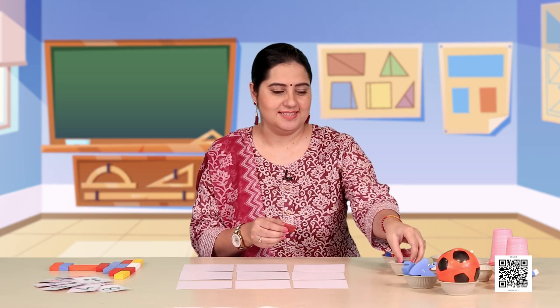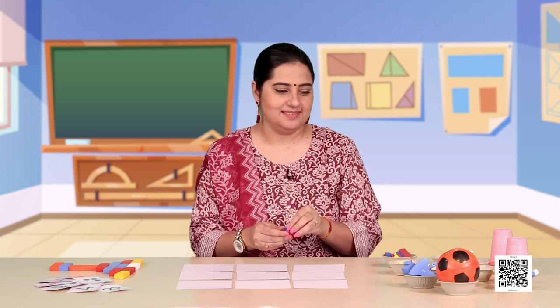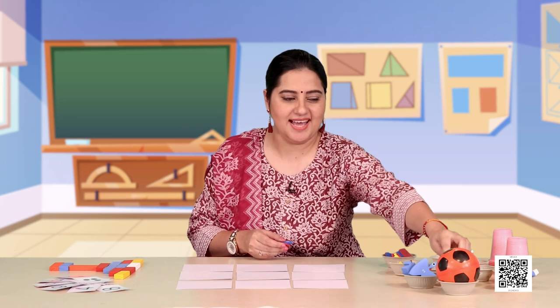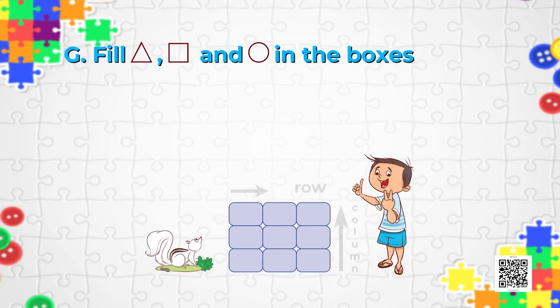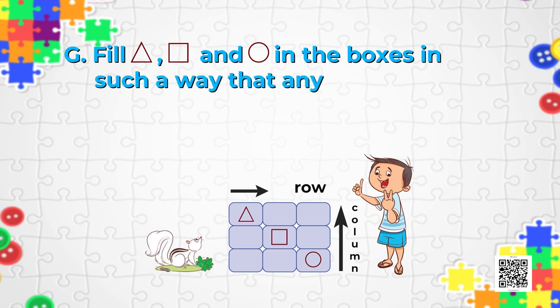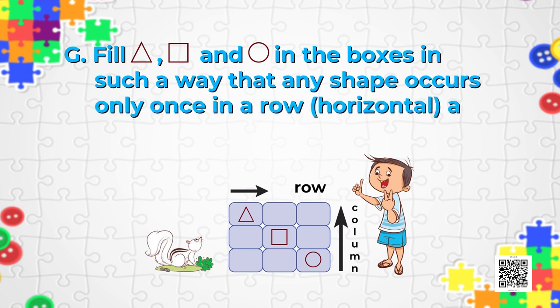Now we have to arrange three different shapes in this grid. The three shapes are a square, a triangle, and a circle. Fill in the boxes with these shapes — circles, triangles, and squares — in such a way that any shape occurs only once in a row and column.